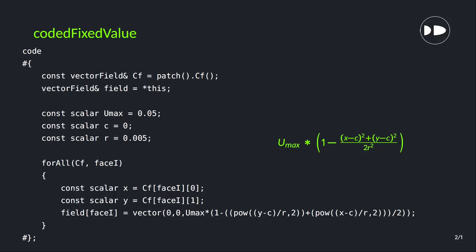Whenever you have a mathematical function for any patch you can use this codedFixedValue boundary. What it does is it creates a temporary boundary condition for your current case and it will save this code file into your case only. So basically you don't need to compile any extra code. You can simply write this code inline in your velocity field in the 0 folder and that will compile during the simulation.